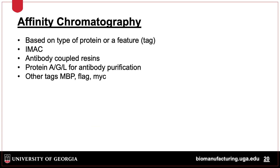Affinity chromatography is used in both research and manufacturing labs. Many proteins have what is known as a 6x His-tag, which means 6 histidines in a row. Proteins with this feature will bind to divalent cation metals like nickel bound to immobilized metal affinity columns, or IMAC. Other resins can have antibodies specific for a certain protein, or antibodies themselves can be purified using protein A, G, or L, which are naturally occurring proteins specific for antibody proteins. Other tags include maltose binding protein (MBP), FLAG, and MYC tags, which are short peptides bound by specific antibodies.